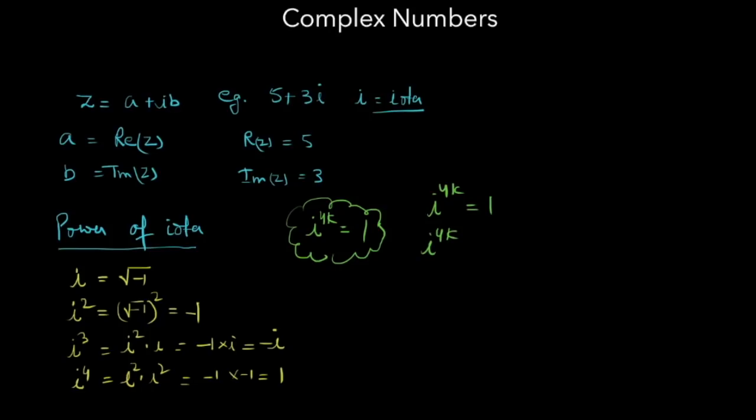iota 4k equals 1. iota 4k plus 1 equals iota 4k into iota, which means iota. iota 4k plus 2, it means iota 4k into iota square, which equals minus 1.